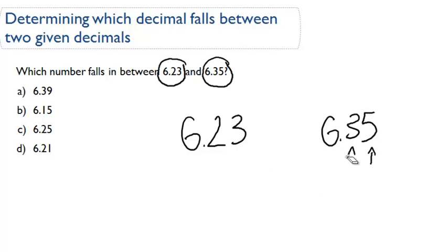So let's try the next answer choice. The next answer choice is 6.15. Right off the bat, you can see that 6.15 is actually less than 6.23 because the number in the tenths place is less. So 6.15, there's a one here, and that number is less than the number in the tenths place for 6.23.